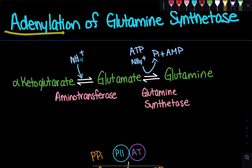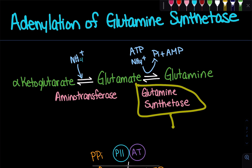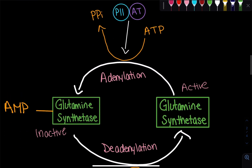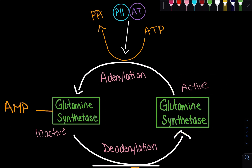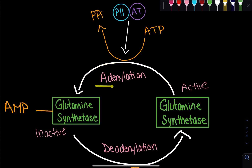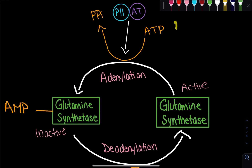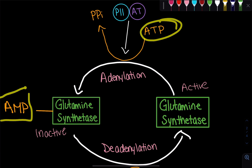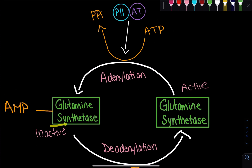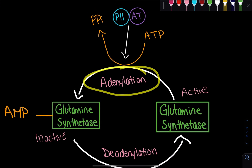We regulate glutamine synthetase through adenylation. When this enzyme is adenylated, it will be inactive. So let's say we have an active glutamine synthetase and we don't need any more glutamine — we must make it inactive. To do that, we adenylate it. We take ATP (a triphosphate), add the AMP (monophosphate) to the glutamine synthetase, and we produce pyrophosphate. This process is adenylation.